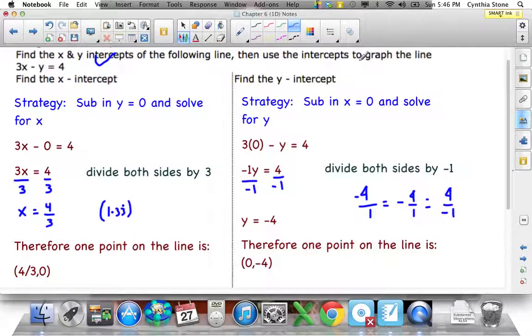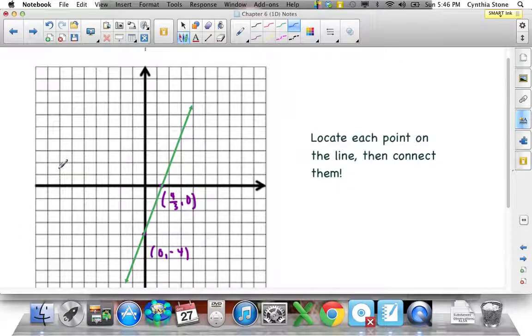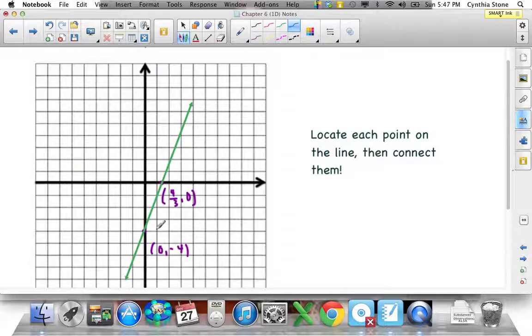Now we need to use the intercepts to graph the line. All you do, fairly simple, is locate each point on the line and then connect them. So, 0 and negative 4, there's my y-intercept down here. My x-intercept, this is why I put it as decimals. I put it as decimals because you may not really think of a fraction. You could go up by fractions on your graph, but usually if you just go up by 1s, which you did, 1, 2, 3, 4, 5, and same as 1s down here, negative 1, negative 2, negative 3, negative 4.